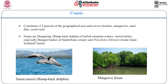The coastal zone constitutes 2.5% of the geographical area and covers beaches, mangroves, mud flats, coral reefs and marine angiosperm pastures. The Sundarbans, shared with Bangladesh, is the largest contiguous mangrove area in the world. The Lakshadweep islands, having a biodiversity-rich reef lagoon system, are also included in this zone. The fauna includes dugong, humpback dolphins of the turbid waters, varied turtles, especially the Batagur baska of the Sundarbans, and the ancient giant softshell turtle. In the figure we can see the humpback dolphin and the mangrove forest.